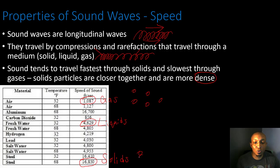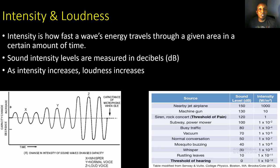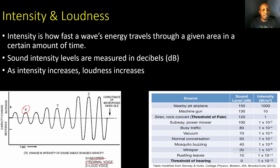Now let's take a look at another property of sound: intensity and loudness. Intensity is how fast a wave's energy travels through a given area in a certain amount of time, and sound intensity levels are measured in decibels. As intensity increases, loudness increases. Looking at this example — a whisper shows low intensity with a low wave, a normal voice increases the wave height, and a loud voice has a much higher amplitude, which increases both intensity and loudness.